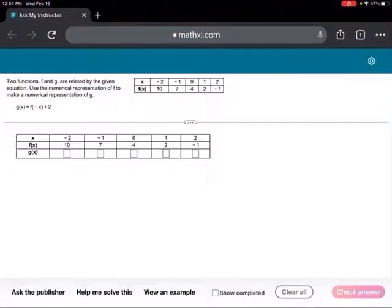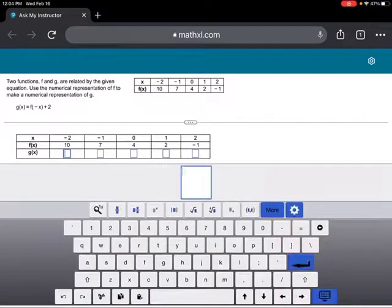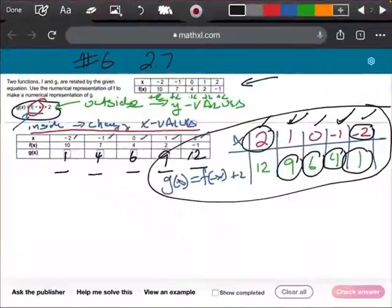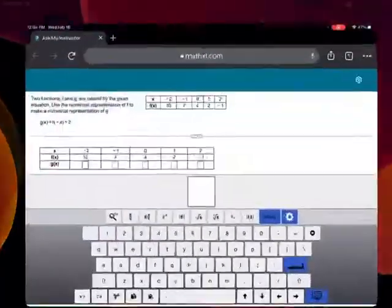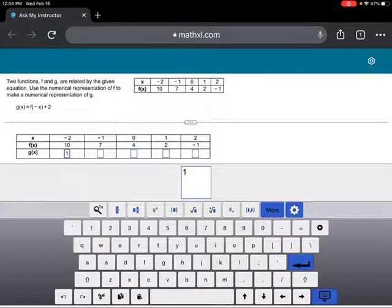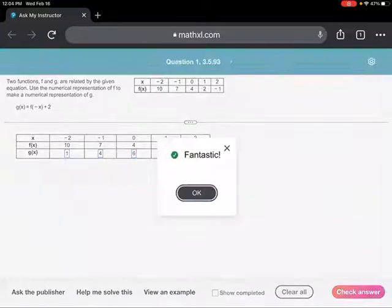And to show you that I'm telling you the truth, let's see. Oh, man, I already forgot. The numbers are 1, 4, 6, 9, and 12. Okay. So, we're going to go 1, 4, 6, 9, and 12. And I'll check my answer. And we got it. Okay.